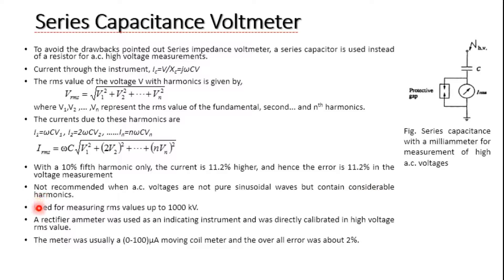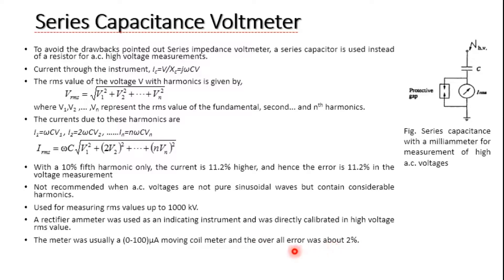However, series capacitance voltmeters can be used for voltages up to 1000 kV. A rectifier ammeter is used as the indicating instrument and is directly calibrated in high voltage RMS values. The microammeter is typically a 0 to 100 microampere moving coil meter, with an overall error of about 2%, and is sufficient to make a full-scale deflection up to 1000 kV.